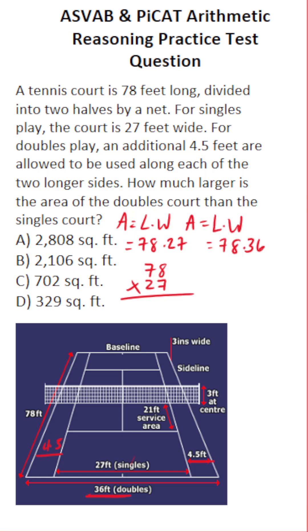Seven times eight is 56. Carry a five. Seven times seven is 49. Plus five is 54. Add a zero placeholder. Two times eight is 16. Carry a one. Seven times two is 14 plus one is 15. Add these up. This is going to be six, ten. So bring down a zero. Carry a one. Ten, eleven. Carry a one. One plus one is two. So the area of the smaller court is 2106 square feet.